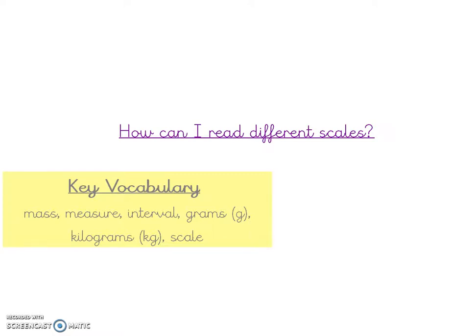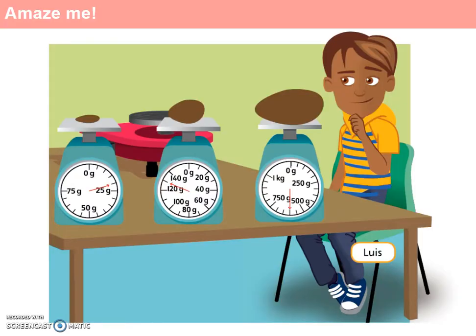In this session, we're going to be learning how to read a range of scales, all related to the idea of mass. Some of these scales are going to have missing intervals, so we're going to have to look at the different strategies that we can use to identify what those intervals mean. So let's open up the textbook and investigate our first problem, which relates to Lewis measuring out clay to make some form of sculpture.